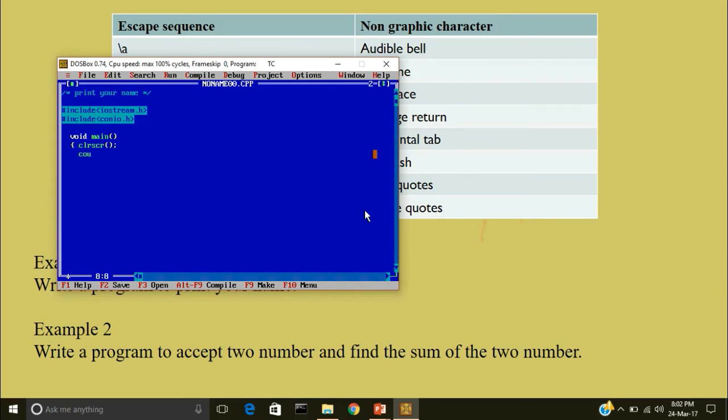And I will write cout within double quotes codingvampire. And I will close it followed by a semicolon. And I will write getch function not to leave the output screen. And close the main body of the program.